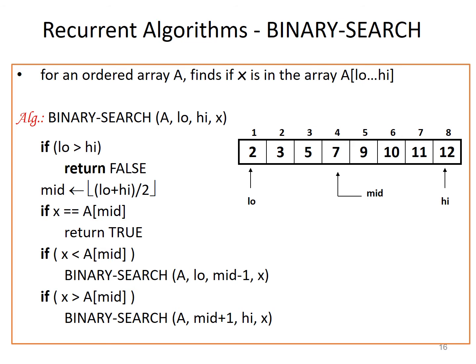We will start with the binary search algorithm. You know the linear search algorithm and its time complexity. We will show how binary search time complexity is much better than linear search. In linear search, the best case finds the element on the first iteration, while the worst case requires iterating through all n elements, giving O(n) time complexity.